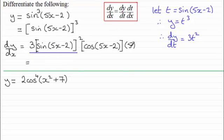It's just a question of cleaning this up. We've got 3 times 5, which is 15. I could write cos(5x-2) first, or I could write sin²(5x-2) next. It's up to you. I'll write sin(5x-2) all squared as sin²(5x-2), and then that's multiplied by cos(5x-2). And there you go.